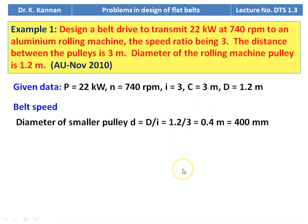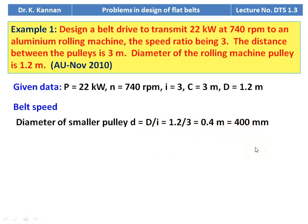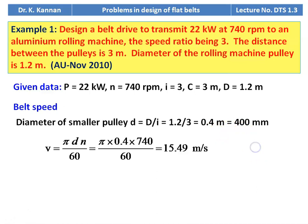To calculate the belt speed, we require the diameter of the smaller pulley: small d = D / I = 1.2 / 3 = 0.4 meter, which is 400 mm — the pulley on the motor side. Belt speed V = π d n / 60 = π × 0.4 × 740 / 60 = 15.49 meters per second.